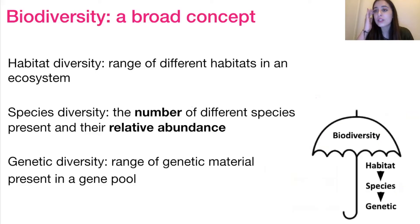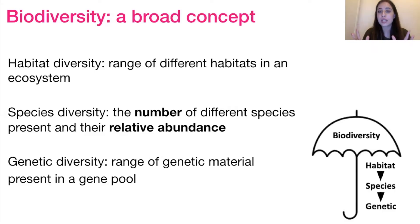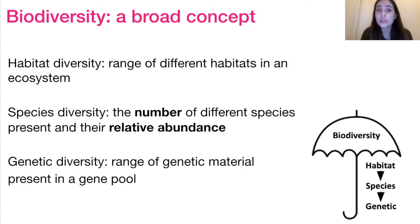Biodiversity is a broad umbrella concept. It includes three subcomponents: habitat diversity, species diversity, and genetic diversity. Each kind of causes the next. Habitat diversity is the range of different habitats available in an ecosystem for species to live in. The more habitats are available, the more different species will be able to thrive there. So because of habitat diversity, we get species diversity.